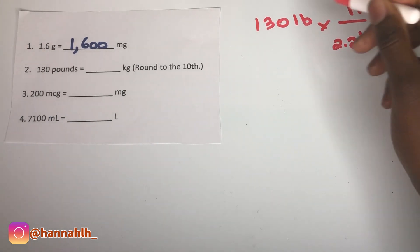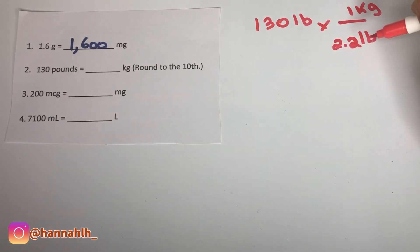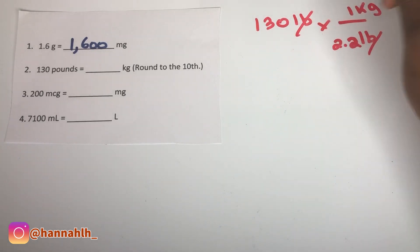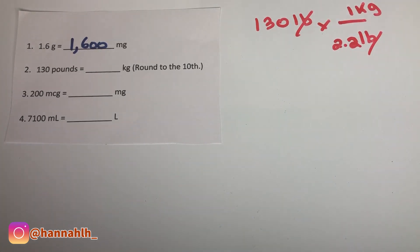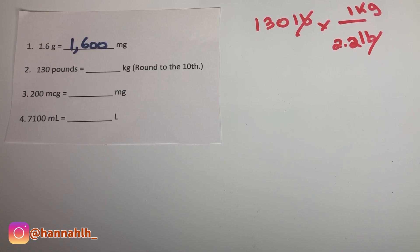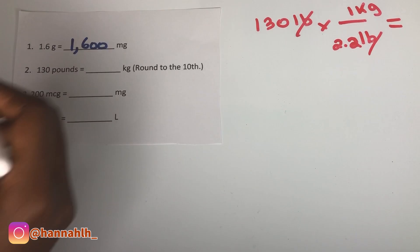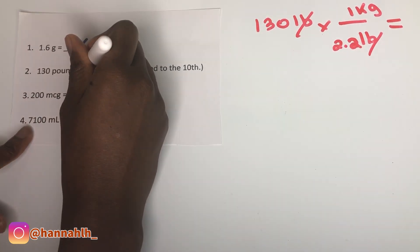These units are going to cancel out. So you're going to divide 130 by 2.2, and the answer should be 59.1 kilograms.